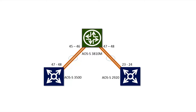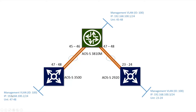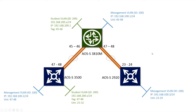We're going to add some VLANs. The first is a management VLAN with VLAN ID 100, using the subnet 192.168.100.x with a /24 netmask. This will be a completely untagged VLAN — I'll get back to what tagging and untagging means later.